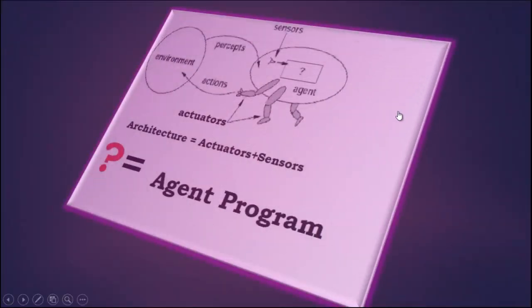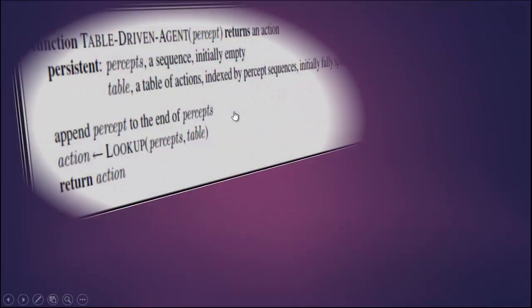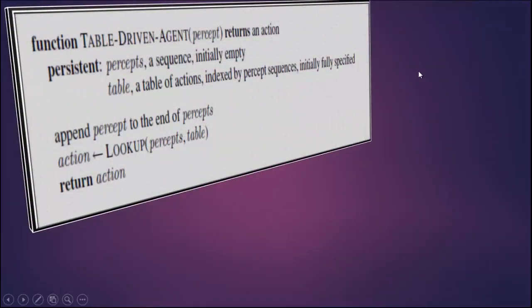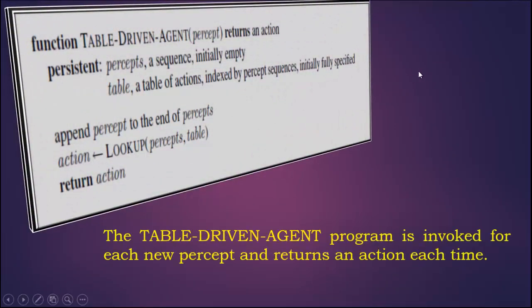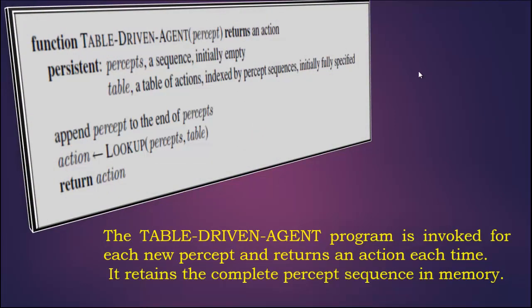This is the model for the structure of an agent. This is the function for the table-driven agent program. The function takes the percept, appends it to the percept sequence, and returns some action.